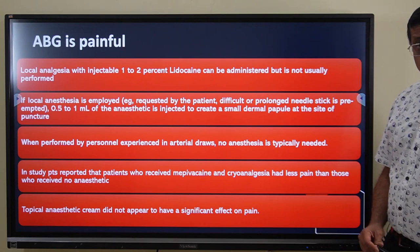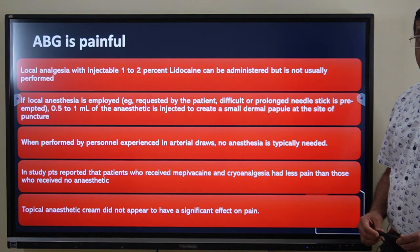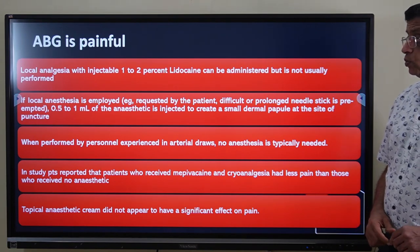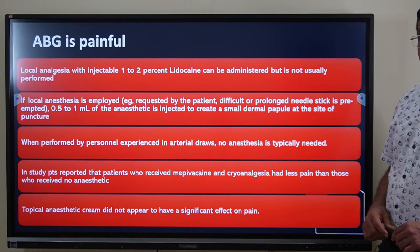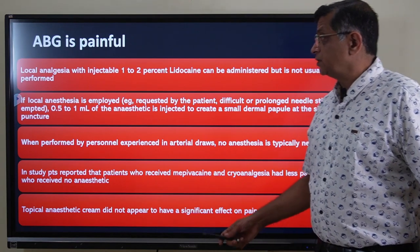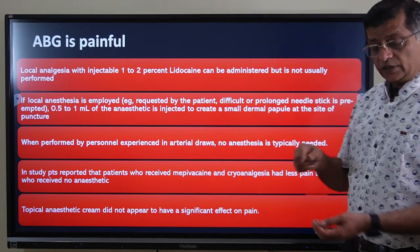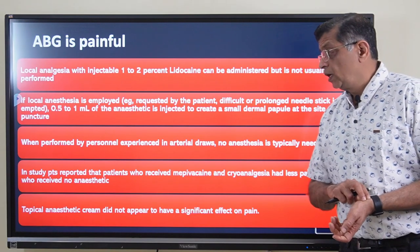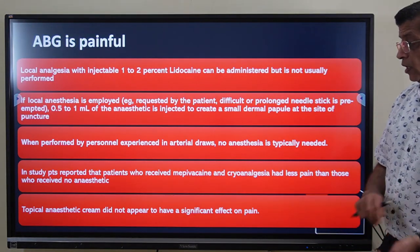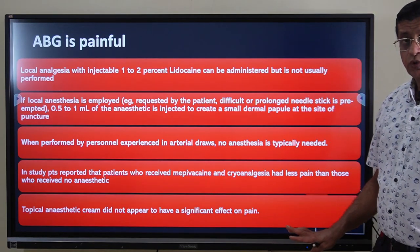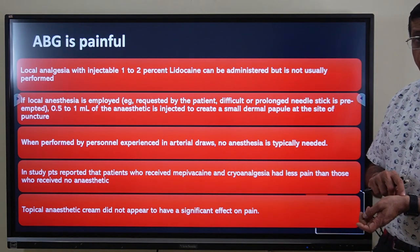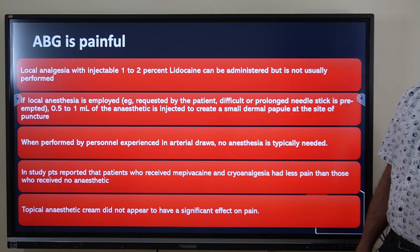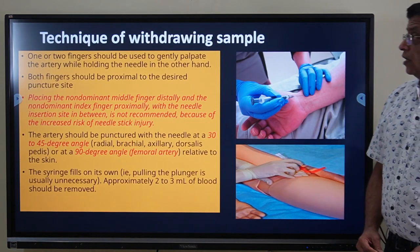ABG is painful. Local anesthesia may be given if multiple pricks are required or if the patient is apprehensive. In that case, give 0.5 to 1 mL of local anesthetic just above the artery — do not give more, as it will make the artery impalpable. In expert hands, anesthesia is usually not required. Topical anesthetic cream is of no use. If anesthesia is needed, use 2% lidocaine in a very small amount just at the needle entry point.